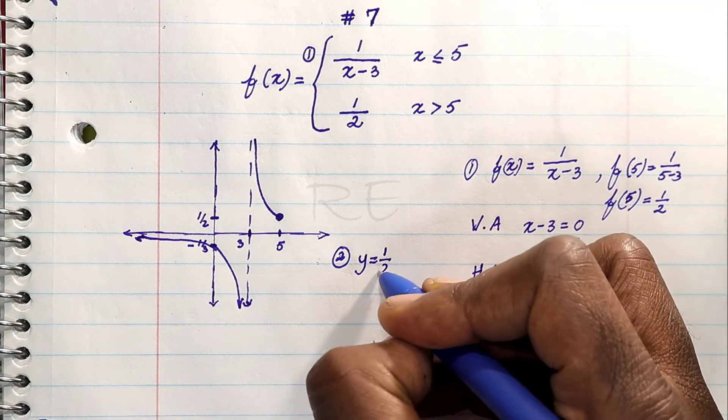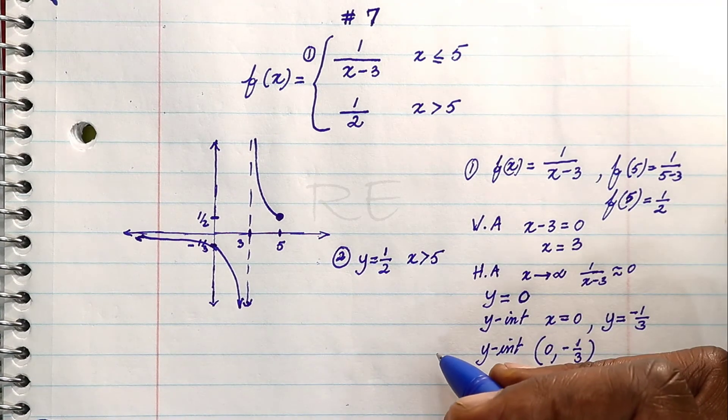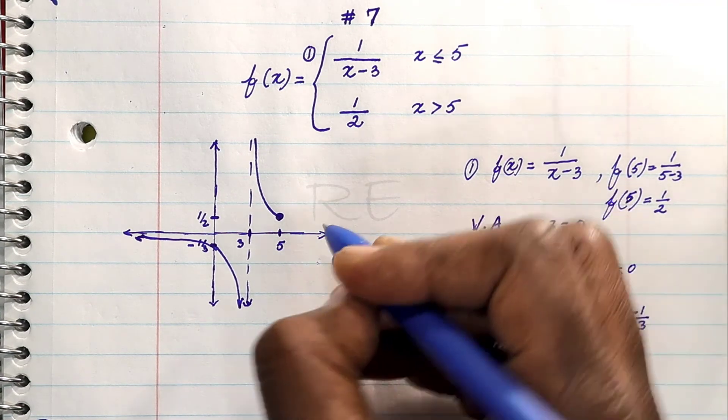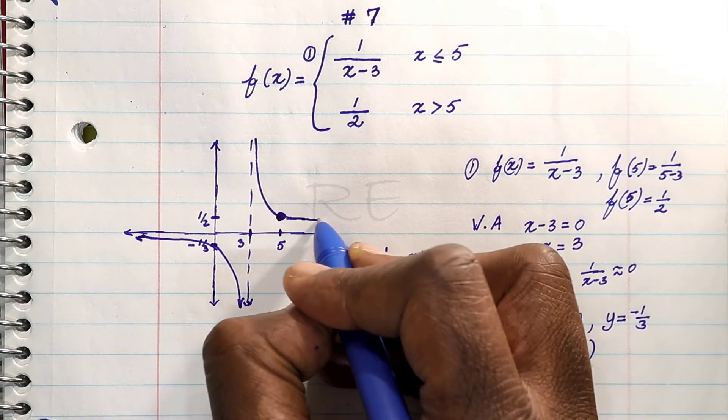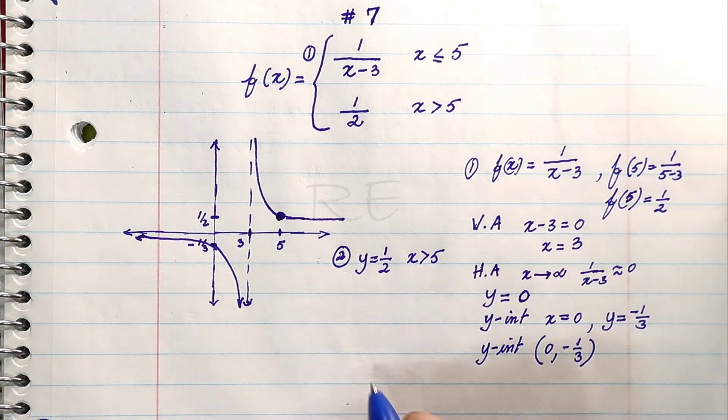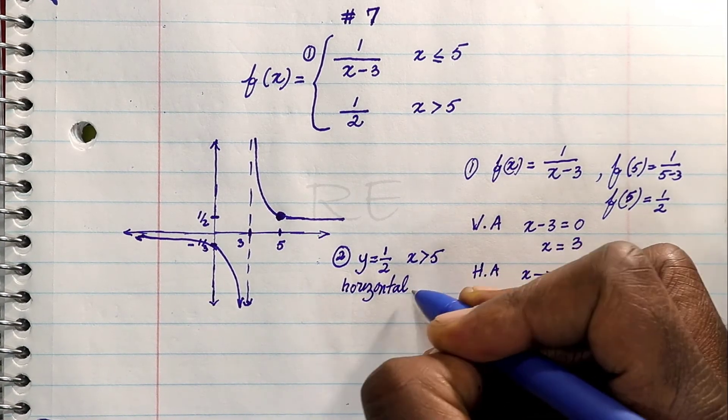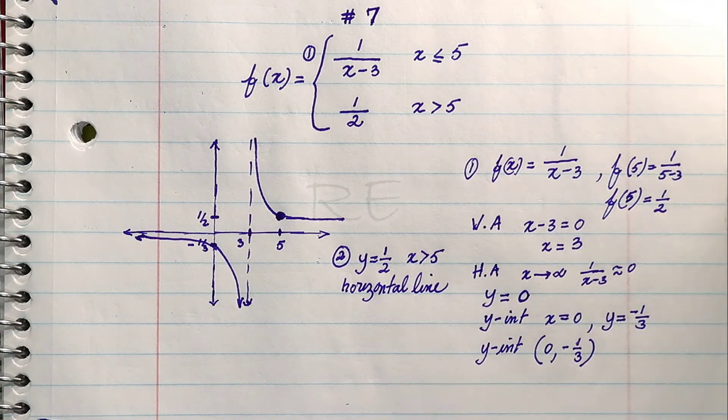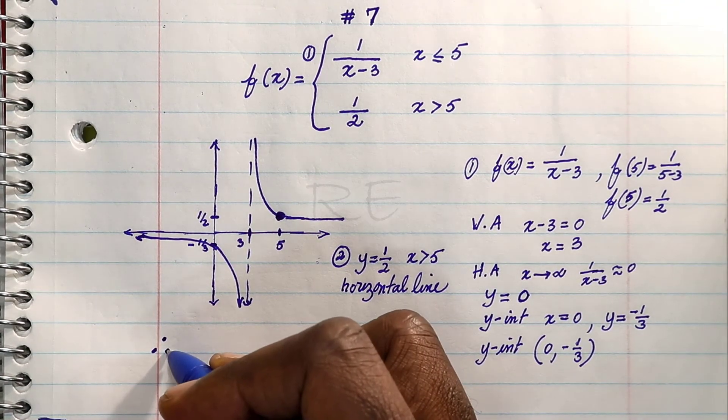The second piece is y equals 1/2 for x greater than 5. So for x strictly greater than 5, we have a horizontal line. Since 5 is included in the first piece, there's no gap.